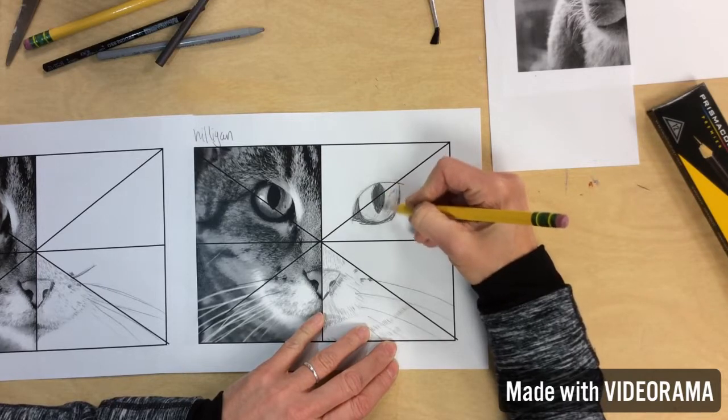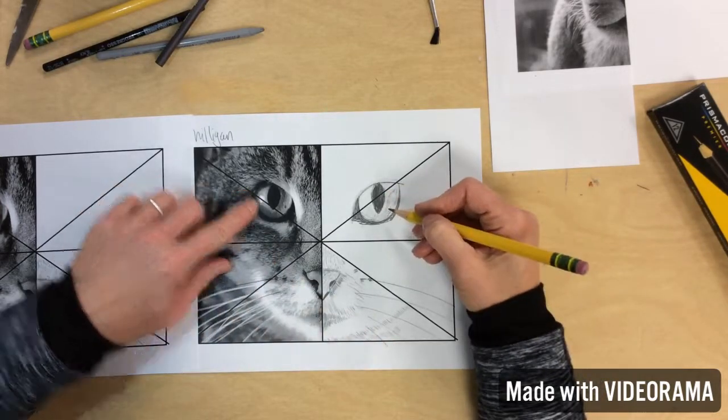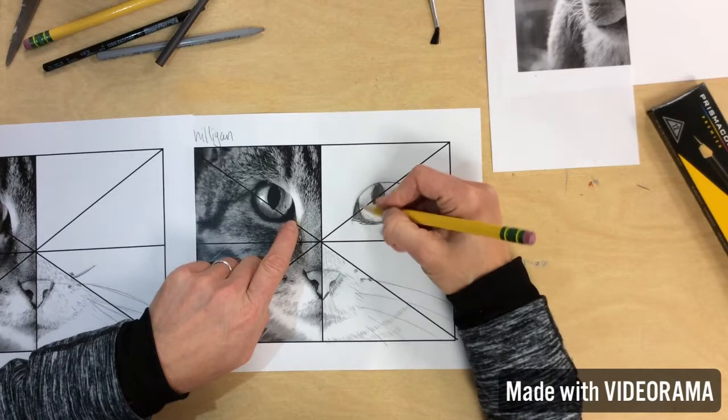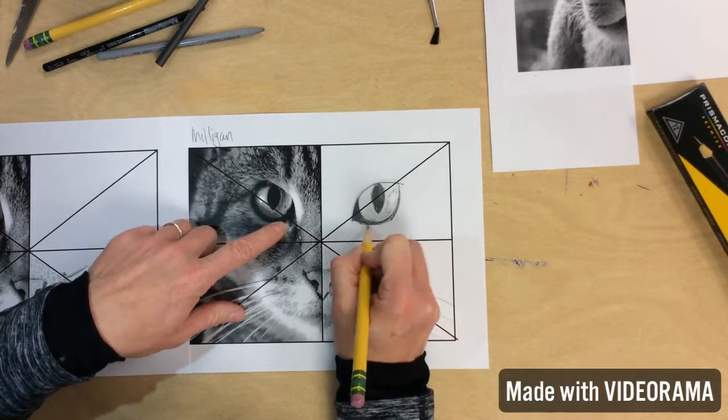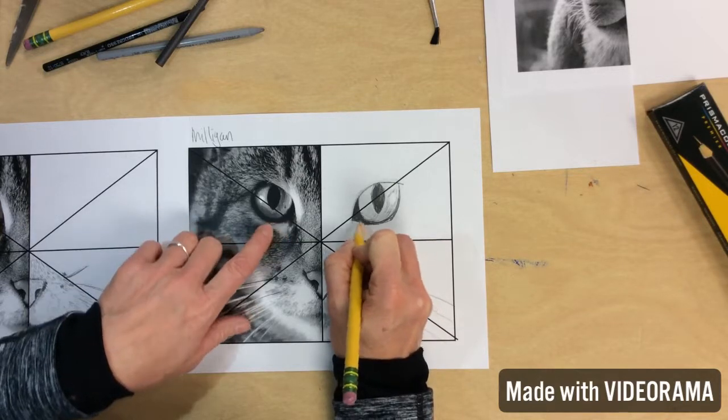Also look and see where is it also dark? Right here. Right in here. So I could come back in and add more. Fill that in. Follow that line with your eye. Where is it going?